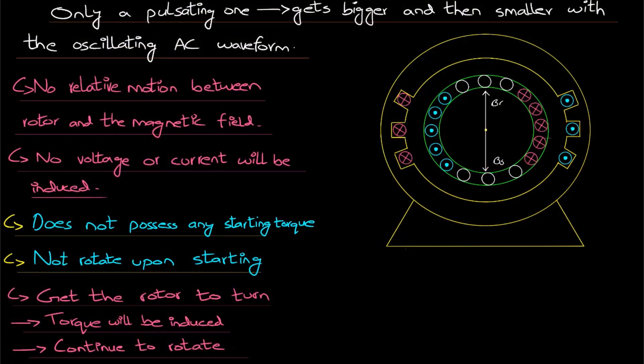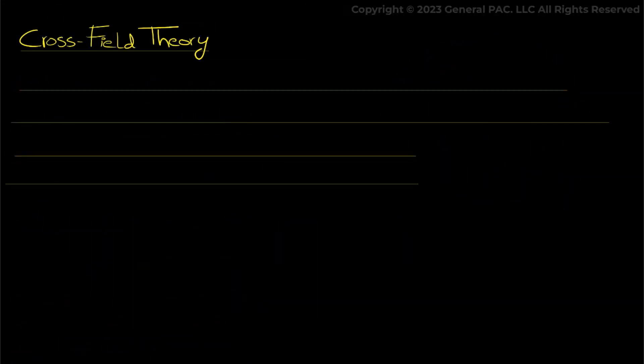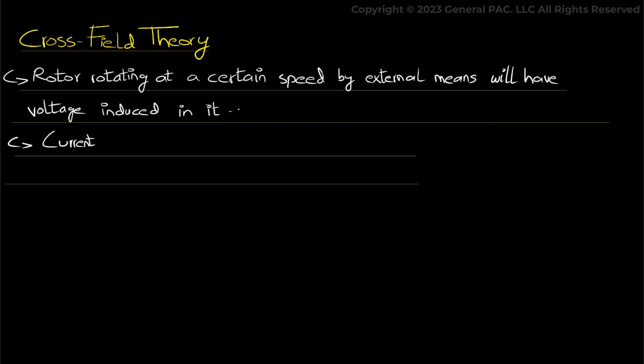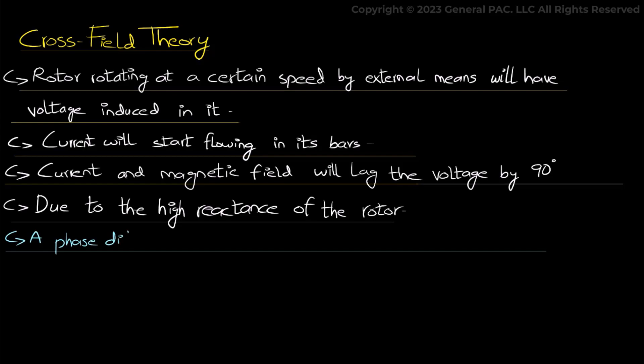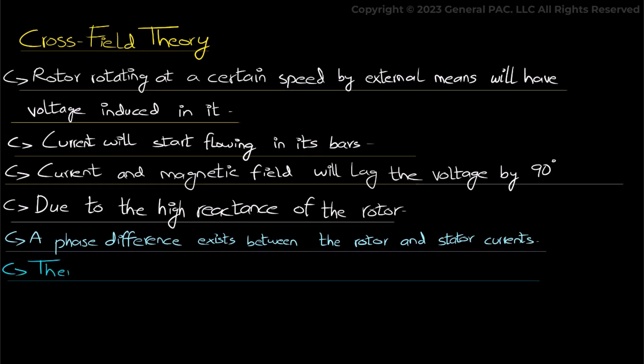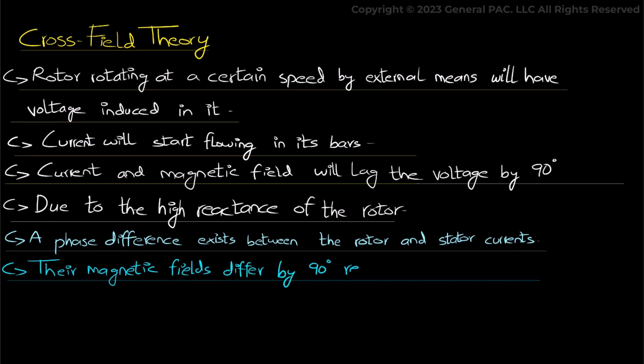Induced torque is explained by the cross field theory in order to fully understand how torque is induced in a single phase motor. It suggests that a rotor rotating at a certain speed by some external means will have voltage induced in it and current will start flowing in its bars. The current and the magnetic field will lag the voltage by 90 degrees due to the high reactance of the rotor. Therefore, a phase difference exists between the rotor and the stator currents. So their magnetic fields also differ by 90 degrees resulting in the net rotating magnetic field.